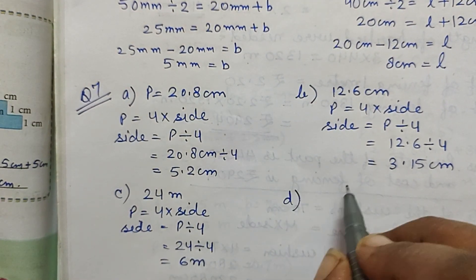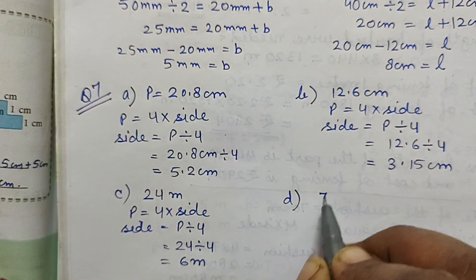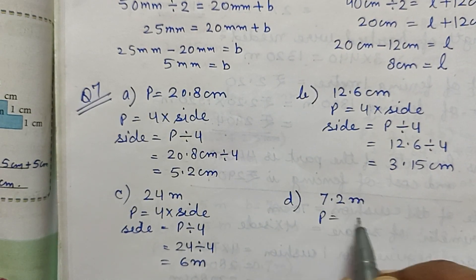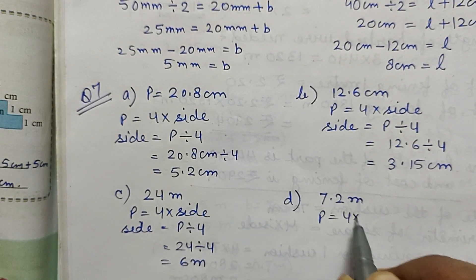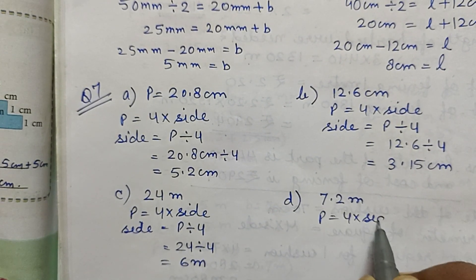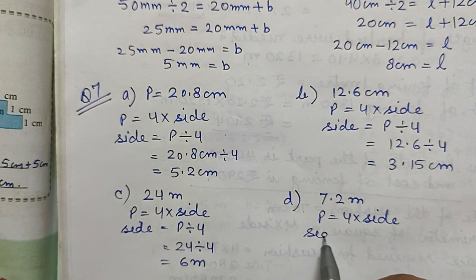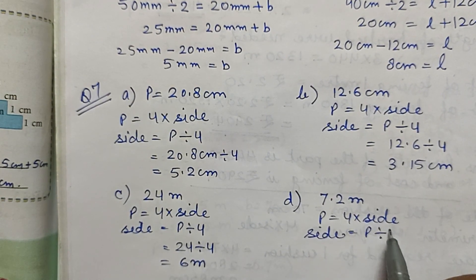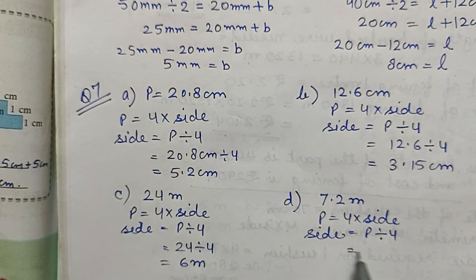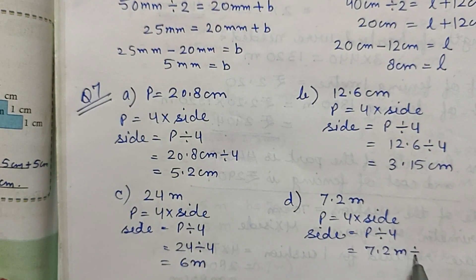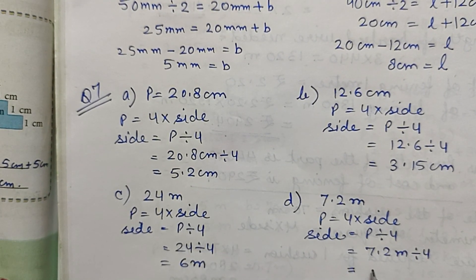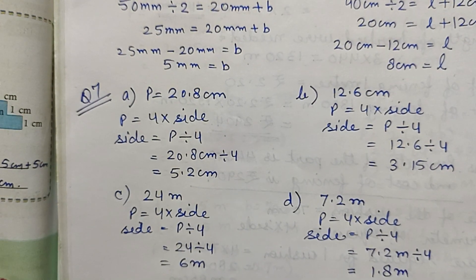Part D: perimeter is 7.2 meters. Side equals perimeter divided by 4, equals 7.2 divided by 4, which equals 1.8 meters.